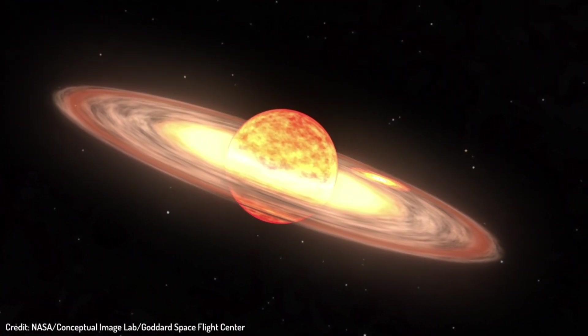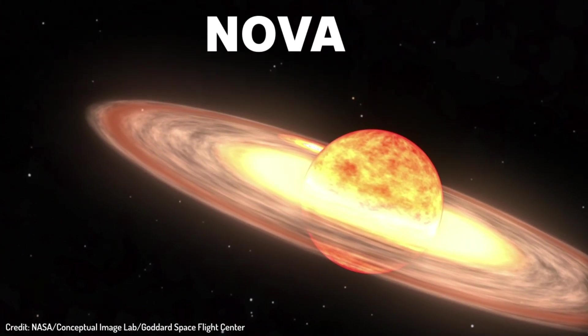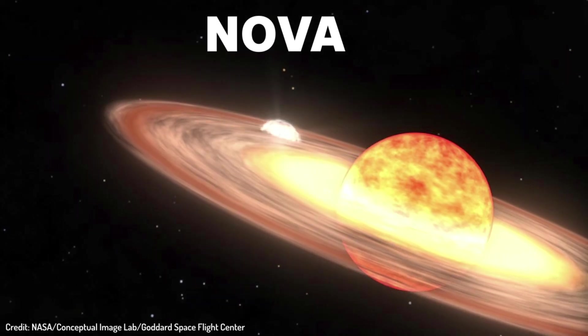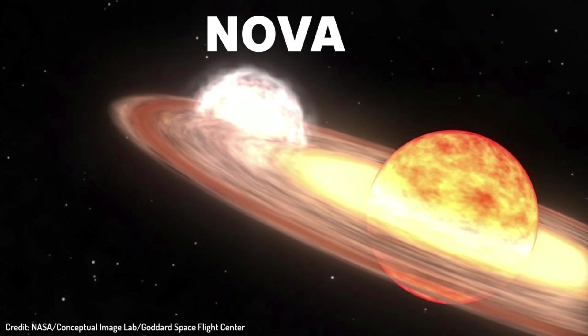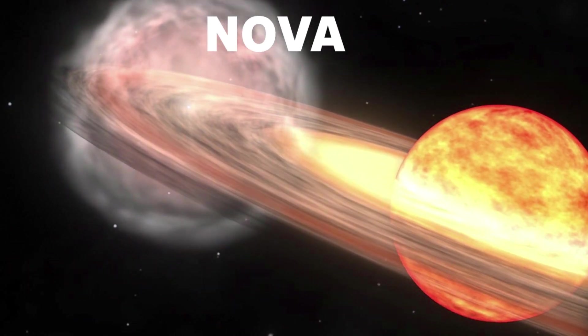Starting with the smallest type called nova. This explosion happens when a white dwarf star pulls matter off of a neighboring red giant star until a powerful nuclear fusion explosion happens on the dwarf's surface. This type of explosion does not destroy the star and explosions happen continuously.